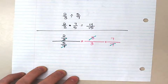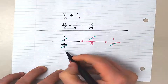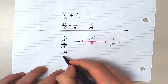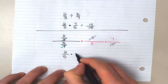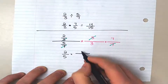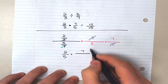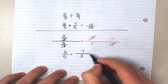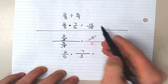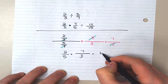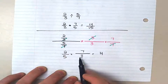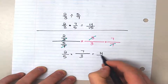If we look at what's left over, we have two over five, multiplied by seven on the top and three on the bottom. This gives us the same result: two times seven is 14, three times five is 15.